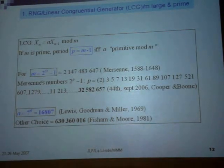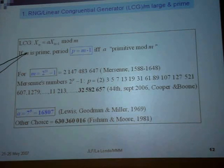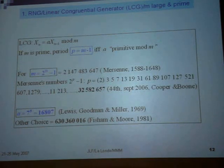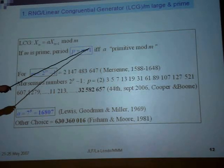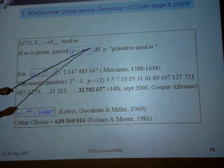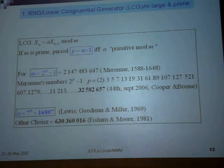Now, instead of taking m to the power of 2, I would take m as a large prime integer. And if some mathematical properties are met — which I won't enter into — the period is n minus 1. So particularly, all the numbers, because we are generating from 0 to n minus 1, all the numbers are used.